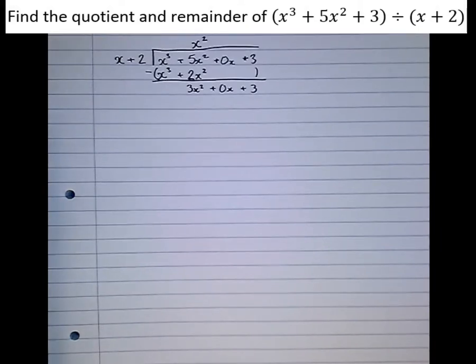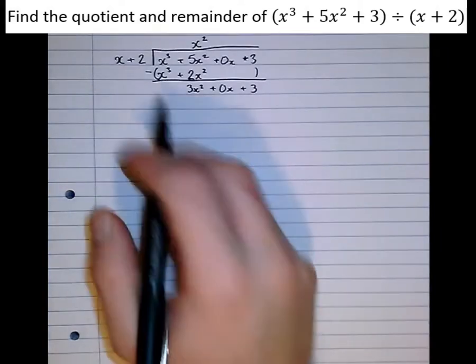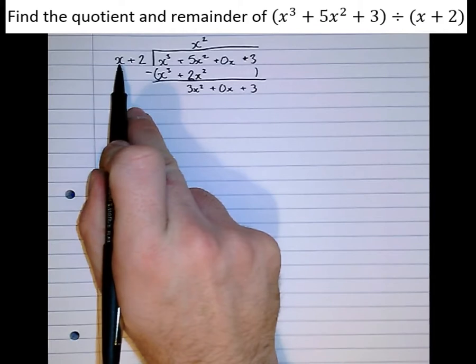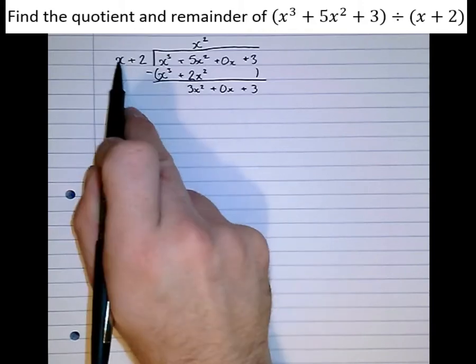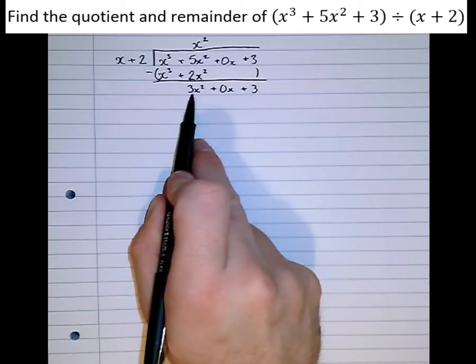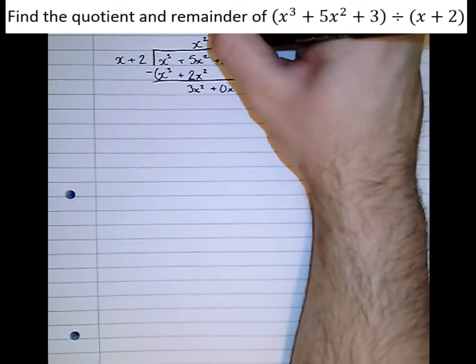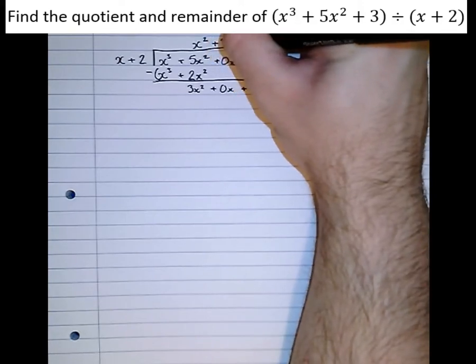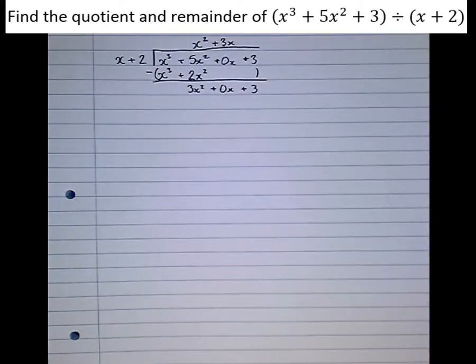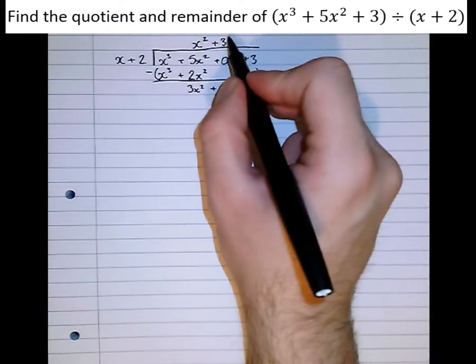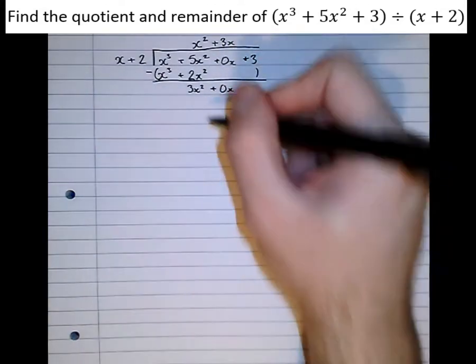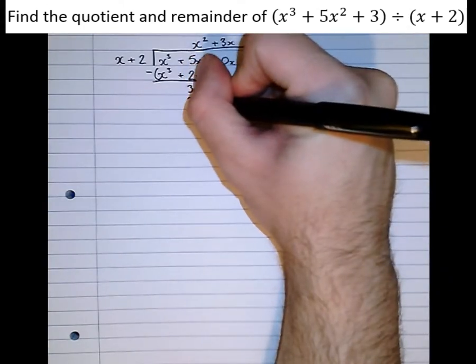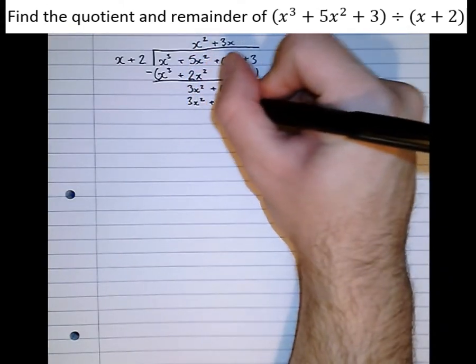The next step is just an exact repeat of what we've just done. So the highest power of x in what we're dividing by going into the highest power of x here. So what do we have to times by again from x to 3x squared? We have to times by 3x. So that's the answer to this part plus 3x. Now exactly what we did before. Take what we've just written down, the plus 3x, and multiply by x plus 2. That gives us 3x squared plus 6x.